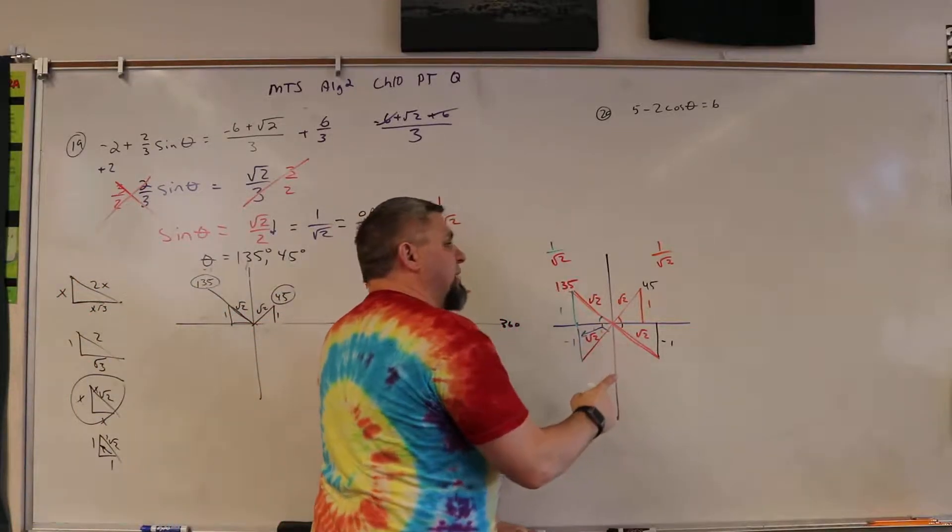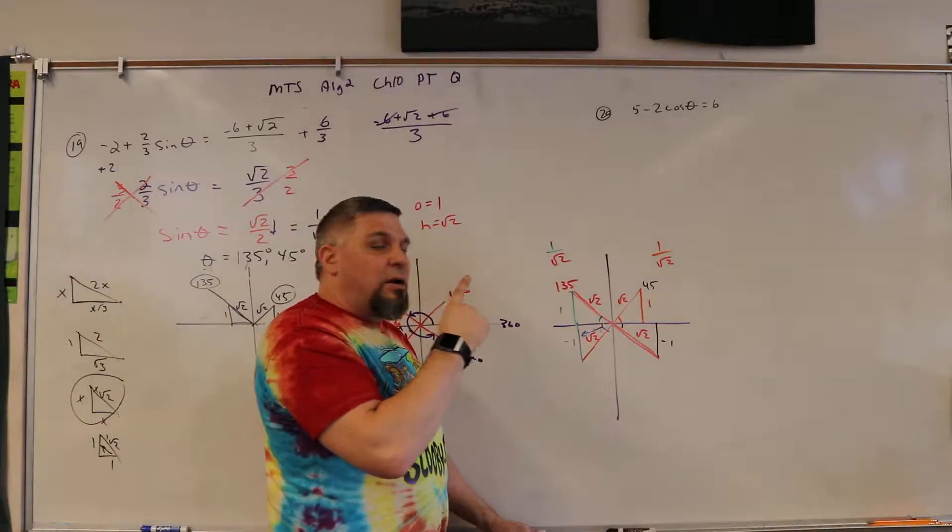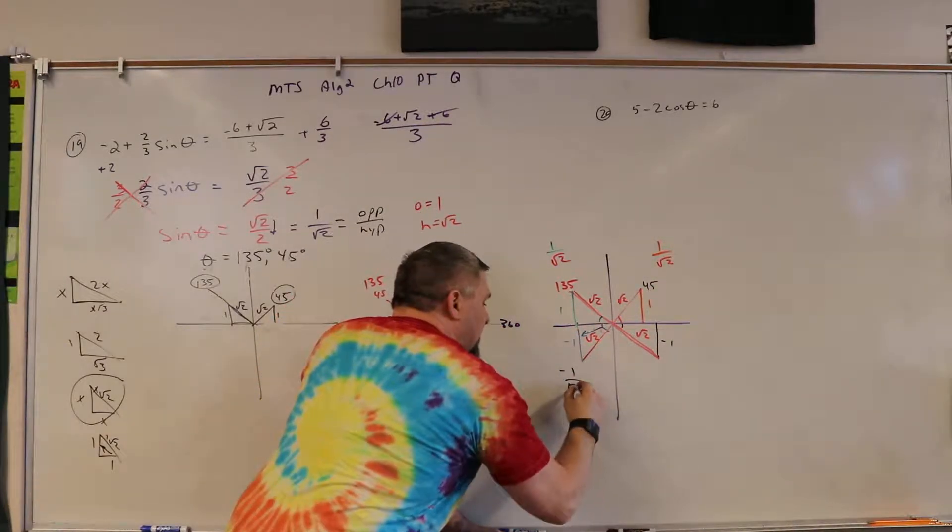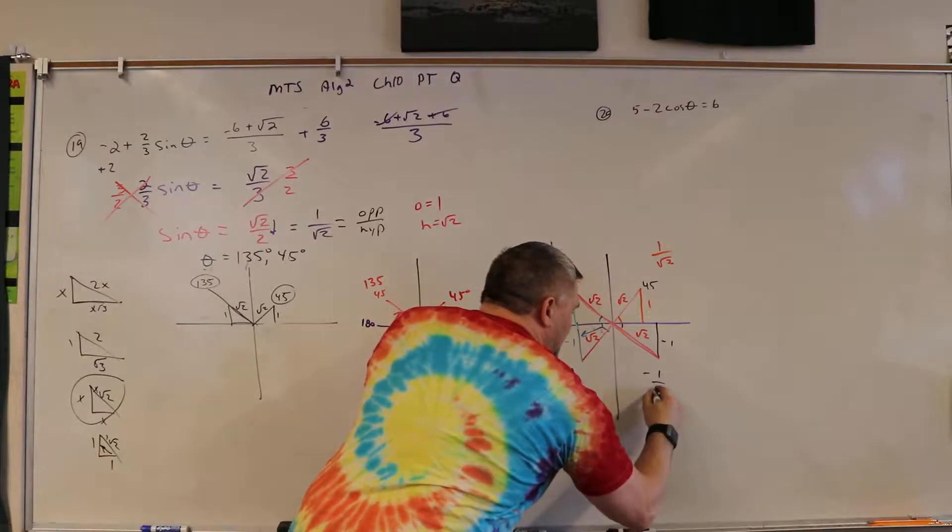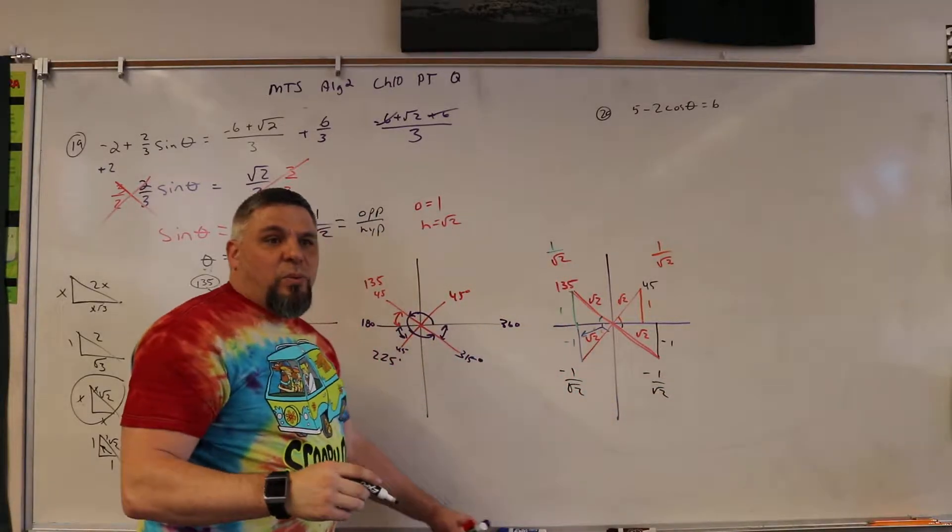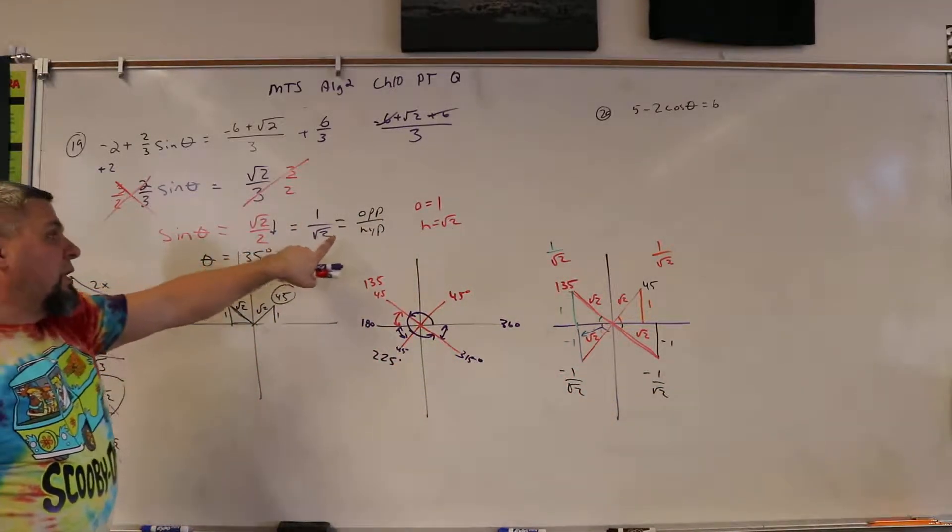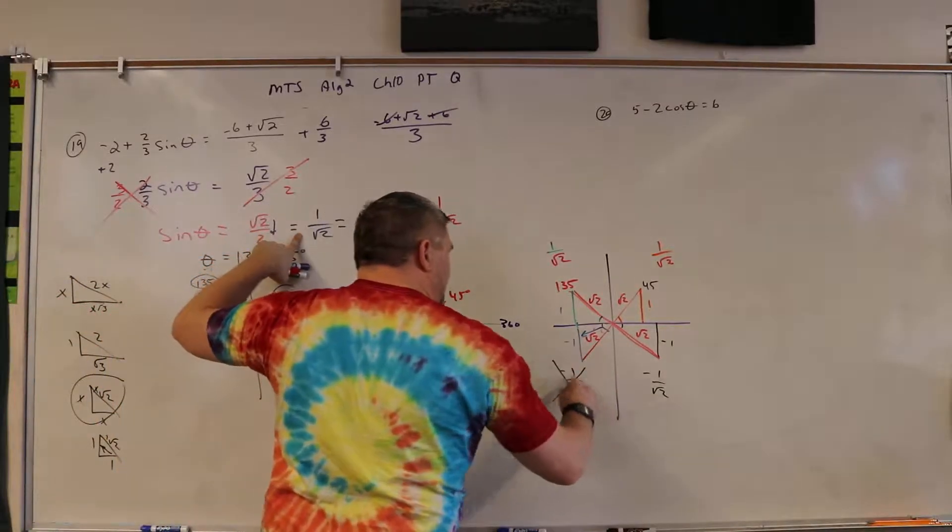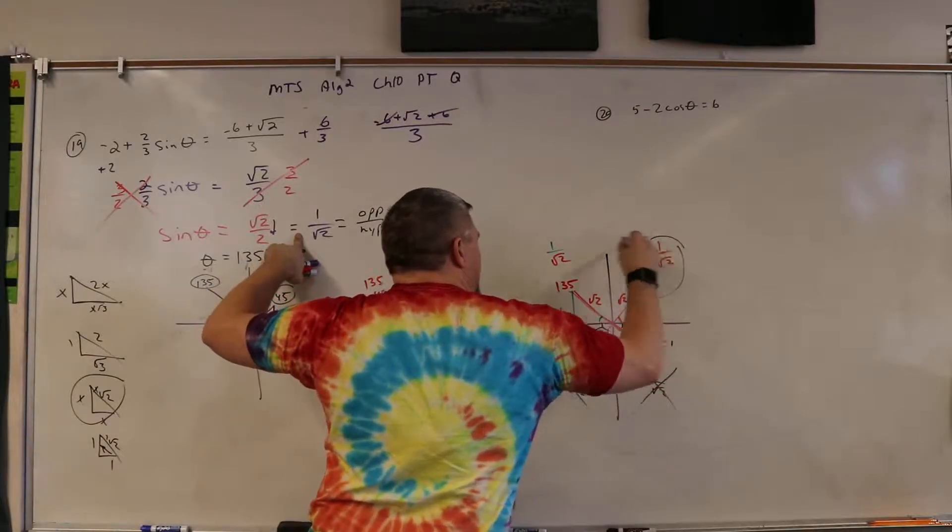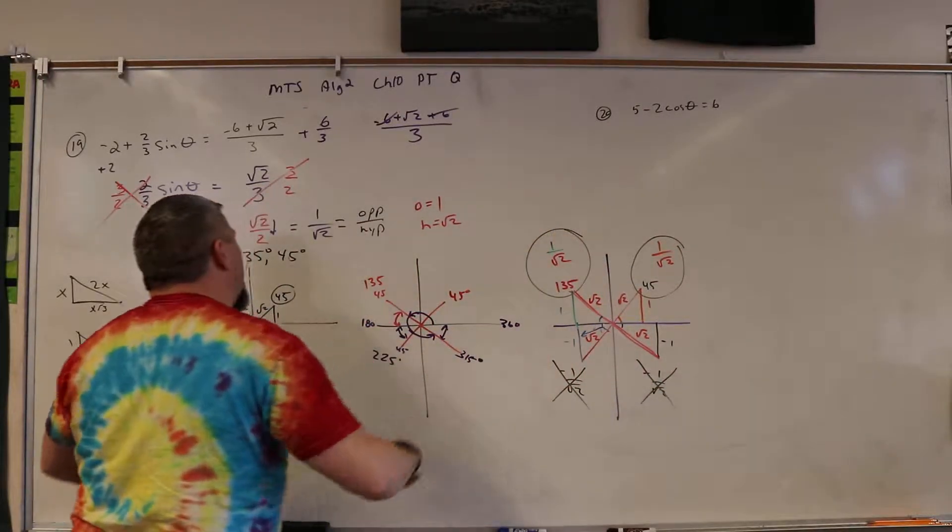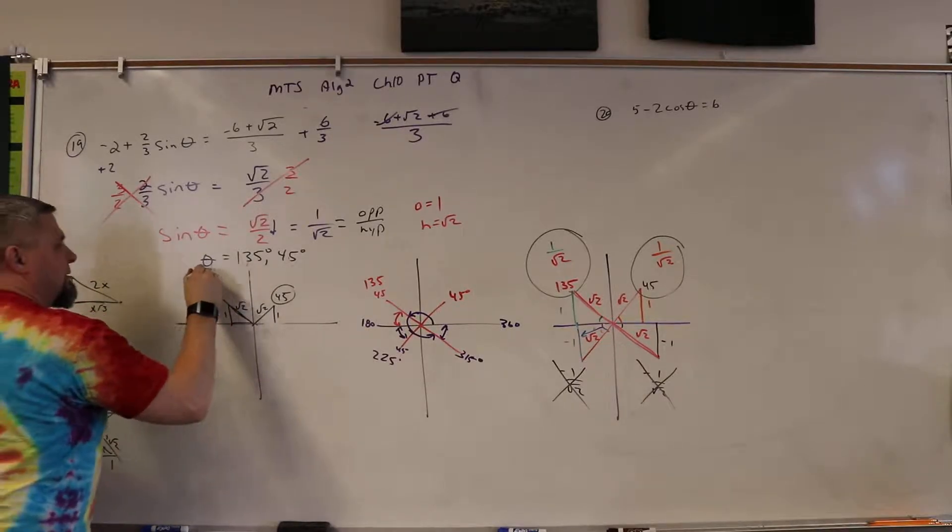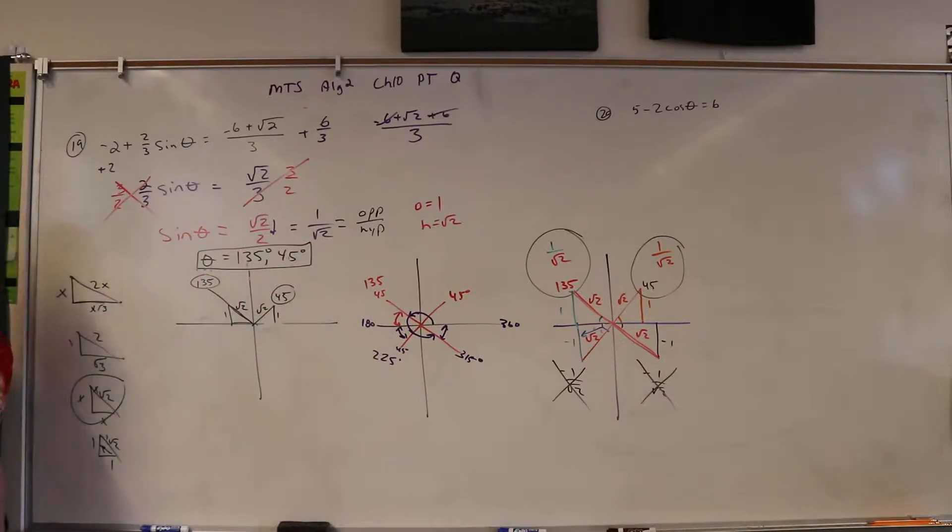So the two angles that work for us that are one over square root two, because this is negative one over the square root of two and this is negative one over the square root of two, and we're only looking for one over the square root of two. So it can't be this and it can't be that. That's why it has to be this and it has to be that. So therefore, theta is equal to 135 and 45.